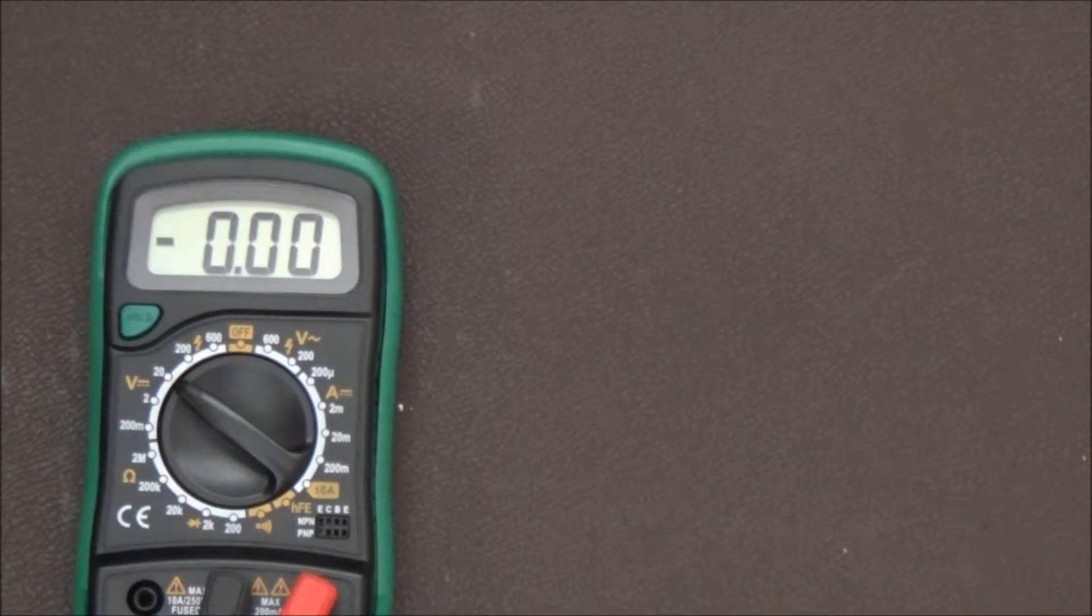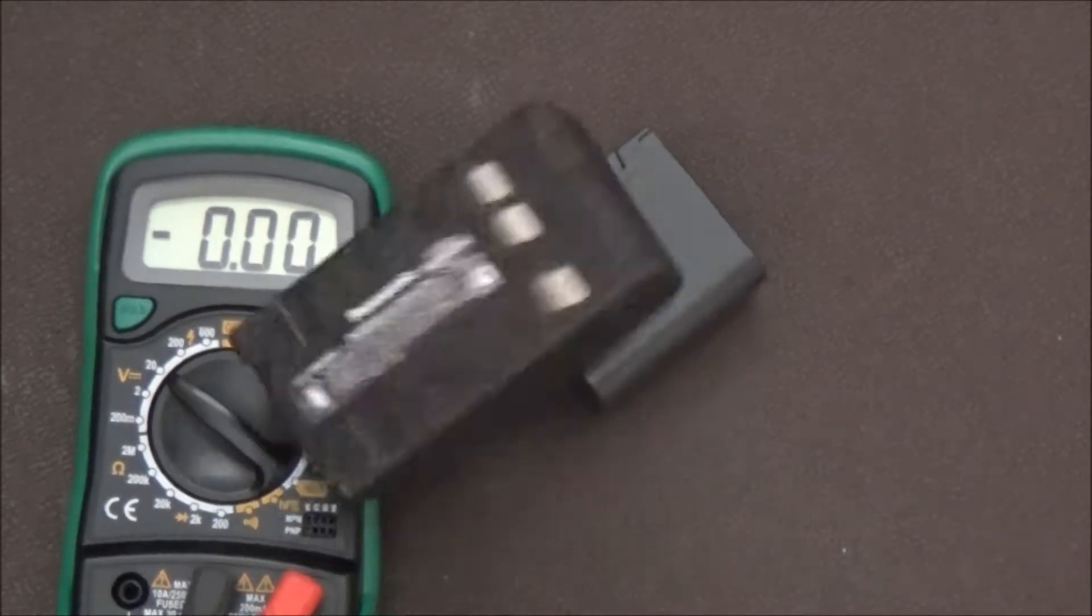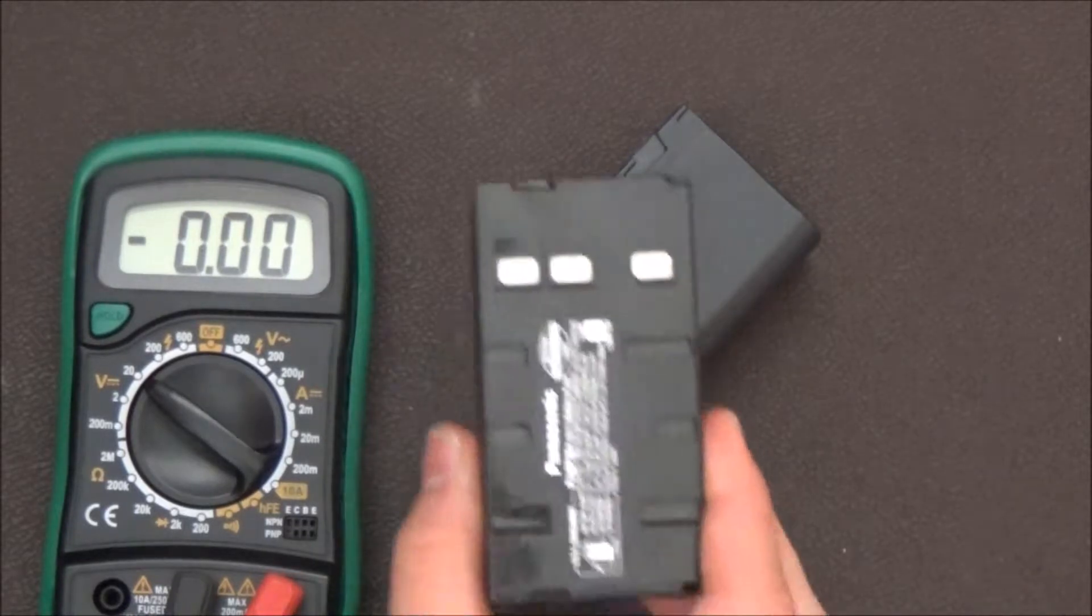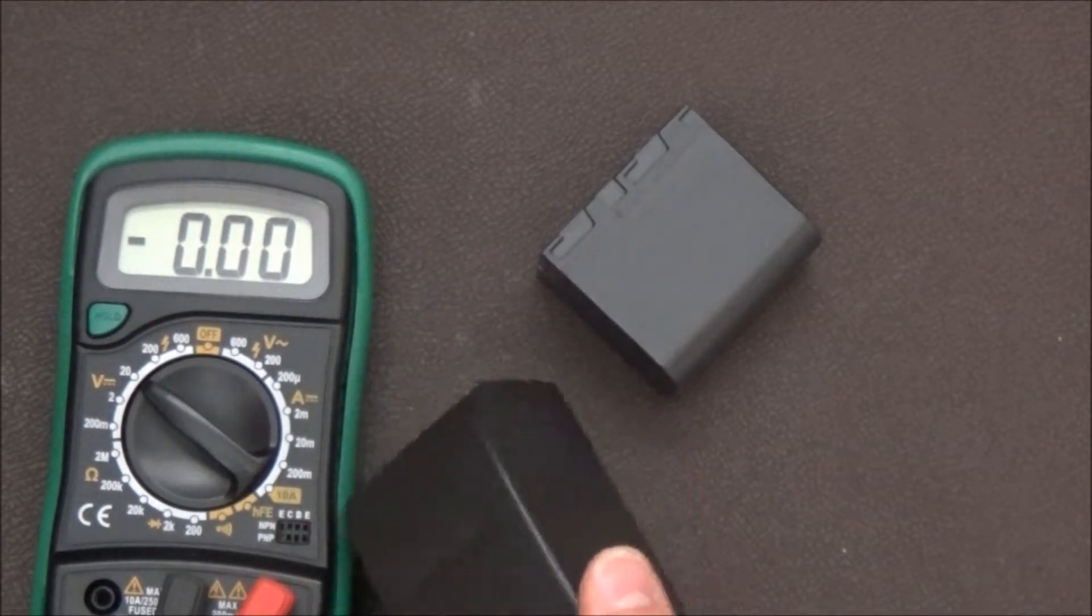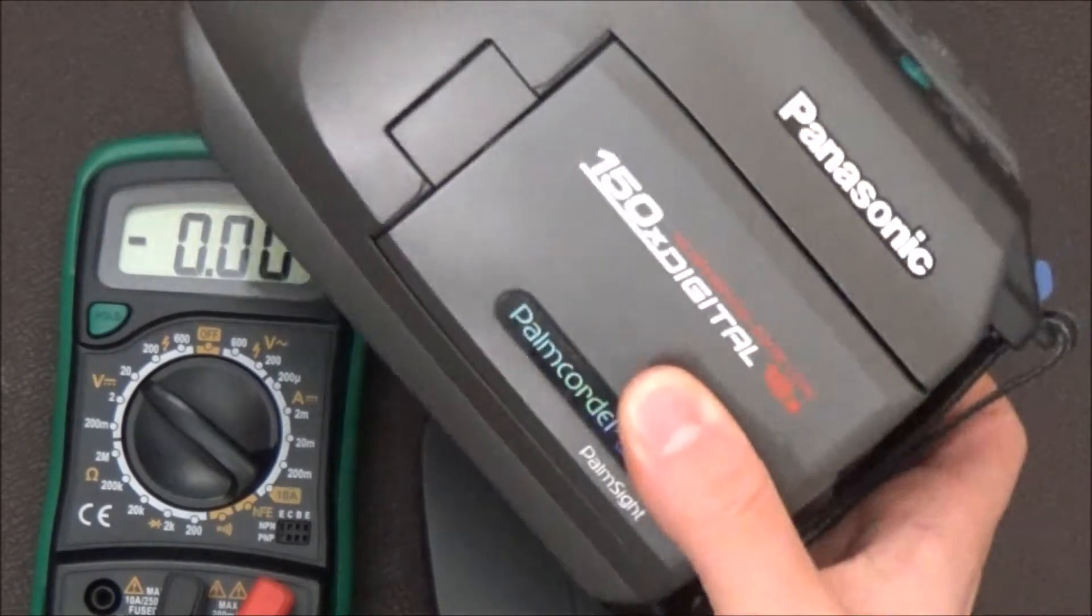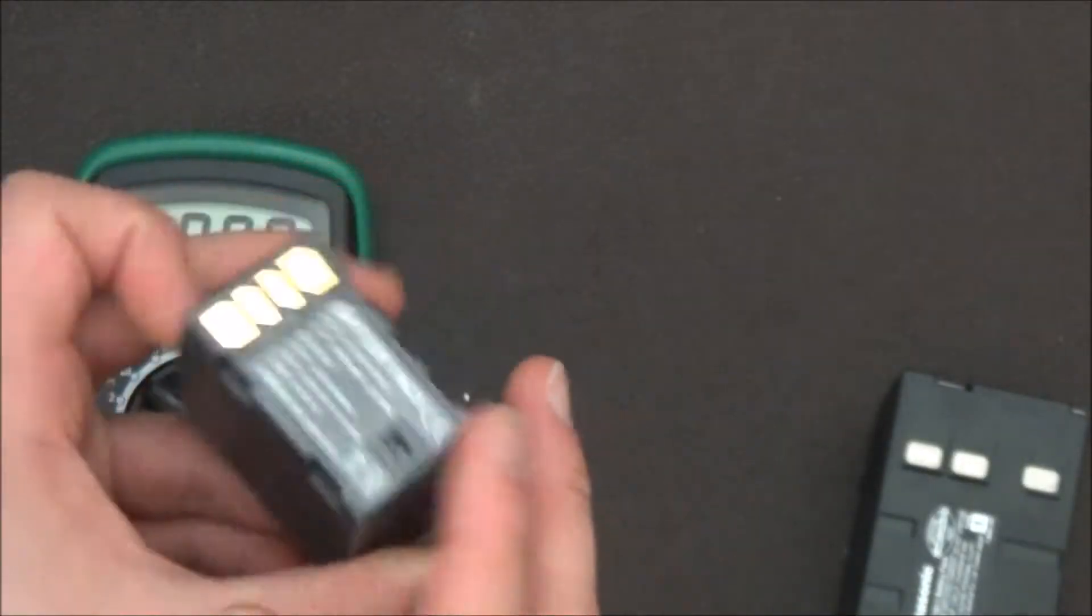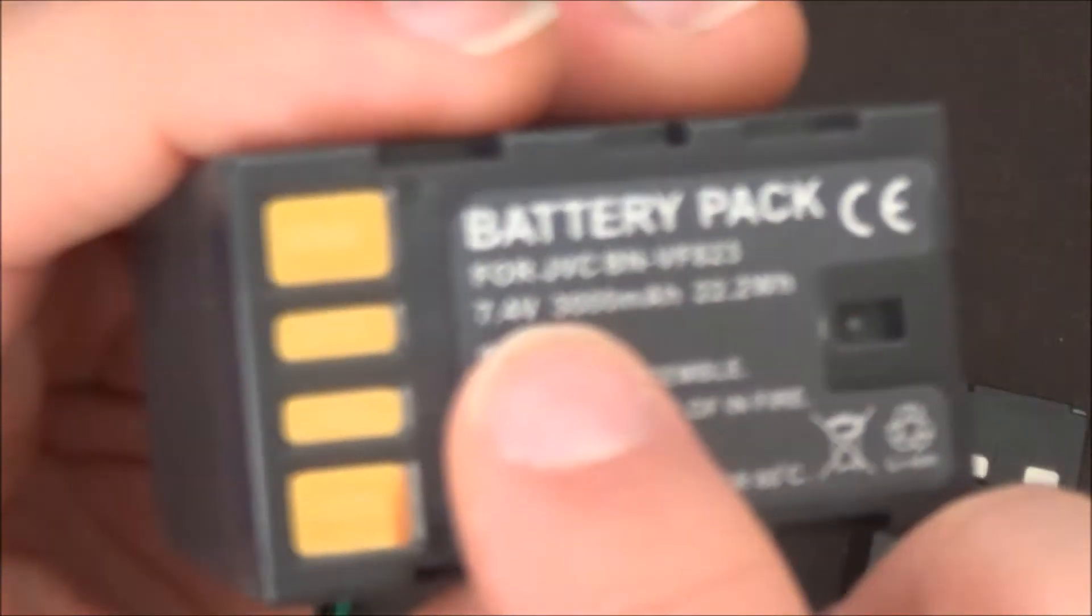Ready to see some lithium batteries? There we go. This is a lithium battery from a camcorder that's actually older than I am. This camcorder here is from 1999. And we're gonna begin now with this. So first of all, we're gonna read the thing. So this says 7.4 volts. That's what it's rated for.